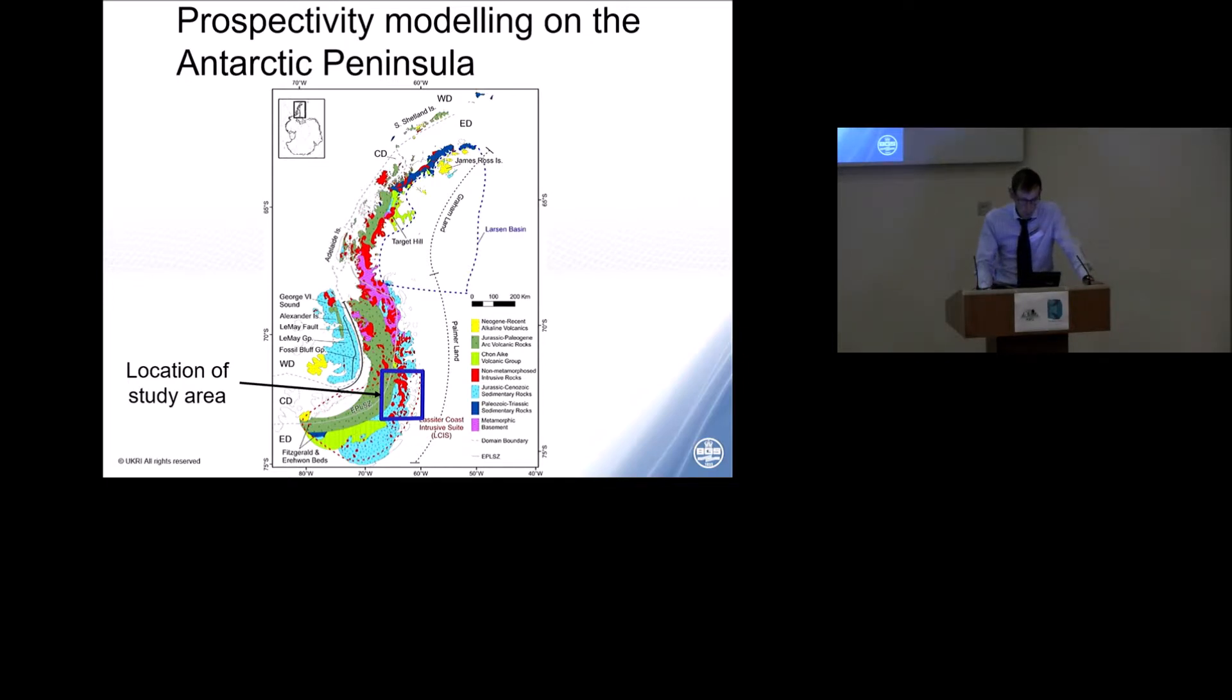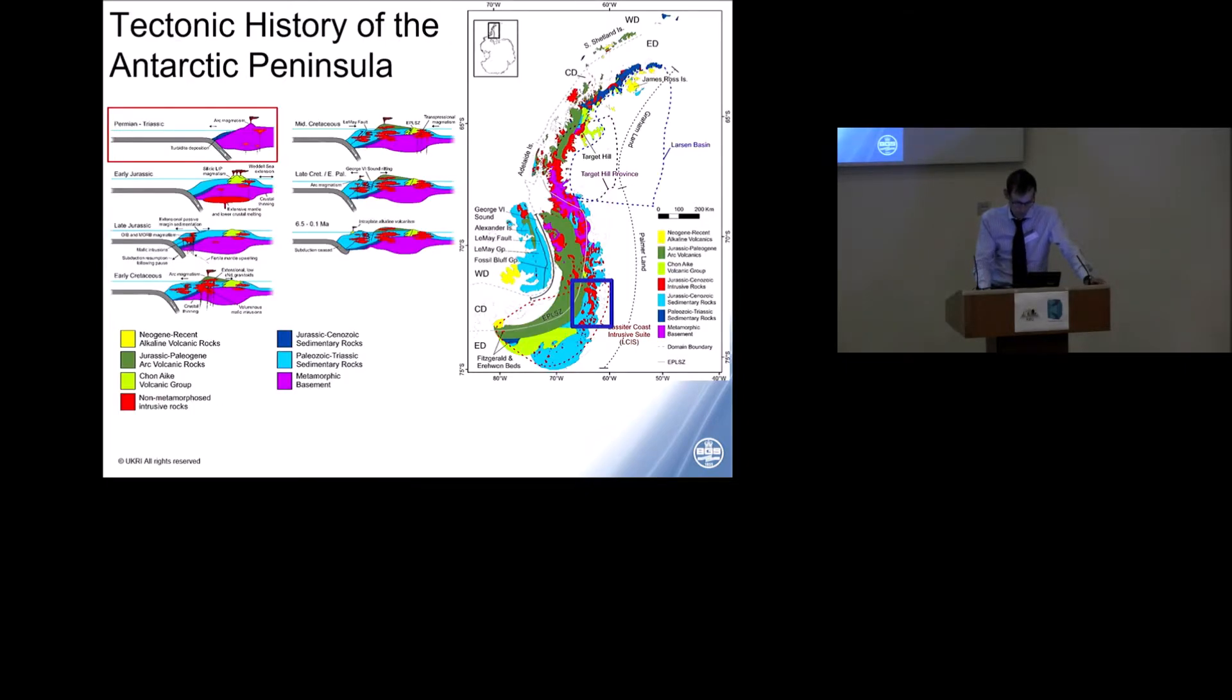Now mineral occurrences are sparse, but there is low-grade copper and sulfur mineralisation that has been seen, largely associated with Mesozoic magmatism and associated fluids. Now, this particular study focused on a small area, you can see there in blue, on the Lasseter coast, and we did that due to the available data sets in the area.